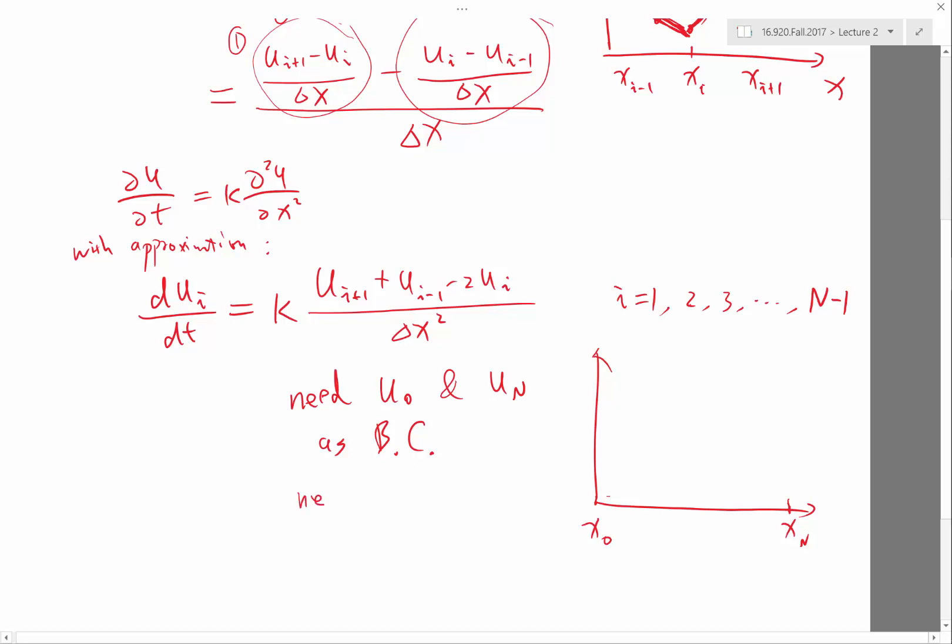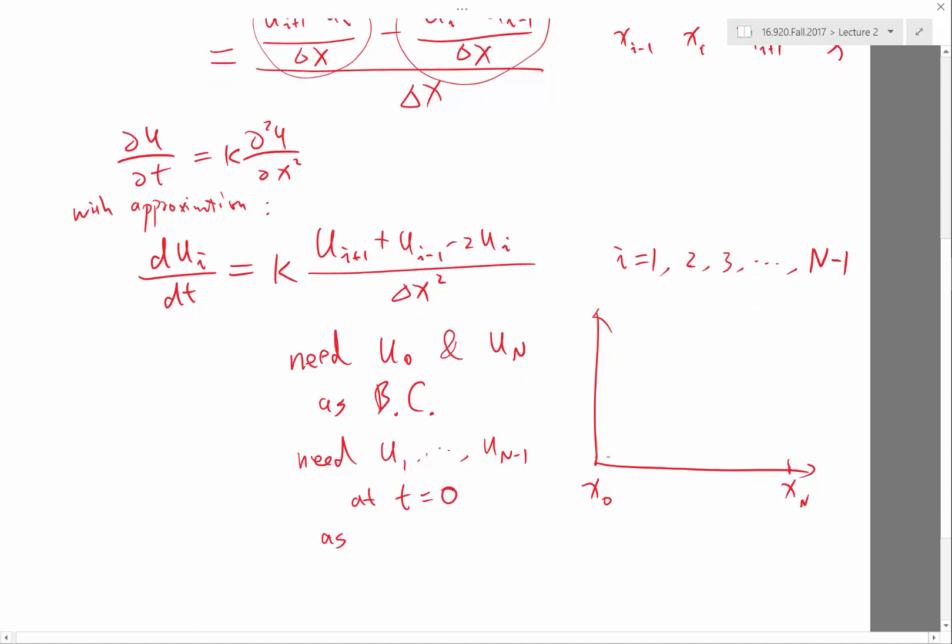We need u_1 to u_N-1 at t equal to 0 as initial conditions. Once we have the boundary conditions and the initial conditions, we have N-1 ODEs for N-1 unknowns.